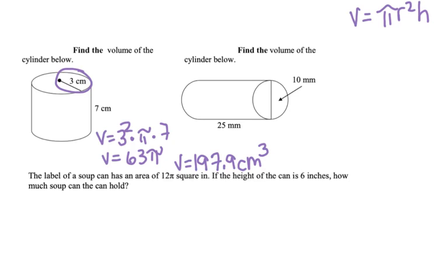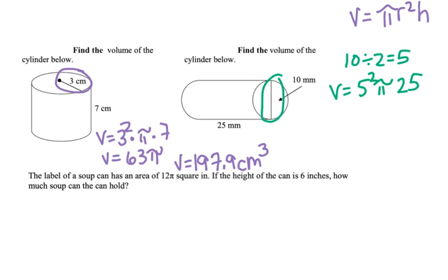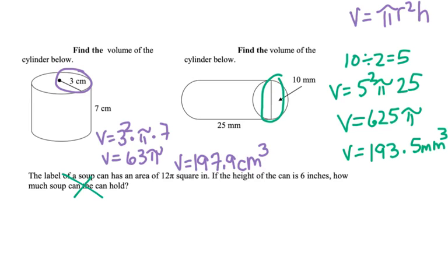In our next example, we need to start by finding our radius. We have a diameter because it's going all the way across. So we're going to do 10 divided by 2, which would be 5. So our volume is 5 squared times pi times our height, which is 25. So we'll get a volume of 625 pi. We'll put that in our calculator, and our volume is 1,963.5 millimeters cubed. We will not do the next example, so we will proceed on.